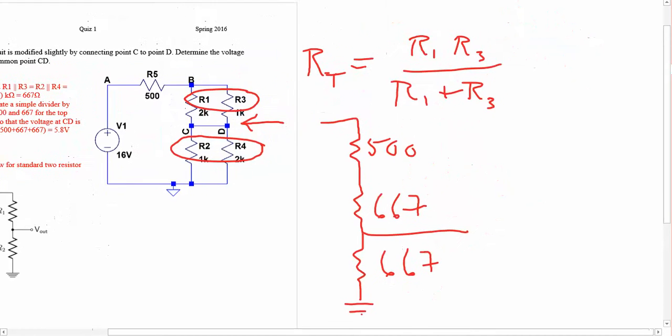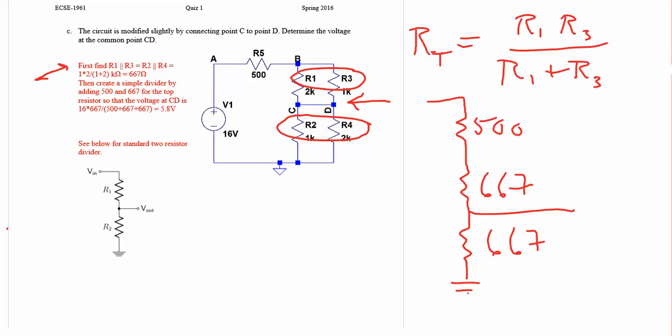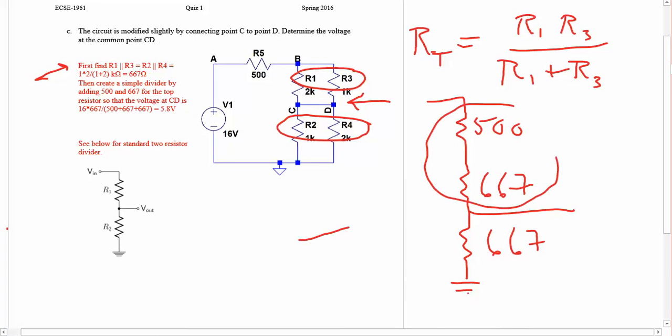The obvious next step then is to combine two of these. I add these in series, and I get 1167.